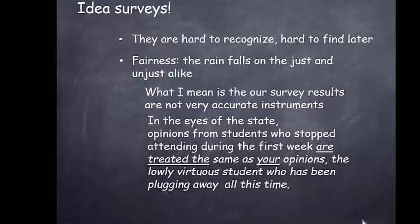What I mean about fairness is that our survey results sometimes are not very accurate — they can be very blunt instruments, and that's why I try to explain what happens to them. It's fairly easy to do that in a campus class, but not so much in an online class. One issue of fairness that has struck teachers and administrators alike is that the administration gives these surveys out to all students, even if the student has dropped out during the first week or so of class, or even hasn't attended at all. That means the opinions from students who stopped attending during the first week are sometimes treated in the same way as the opinions of students who have been plugging away at the class, trying to improve on their work and trying to do better. I don't think that's very fair.